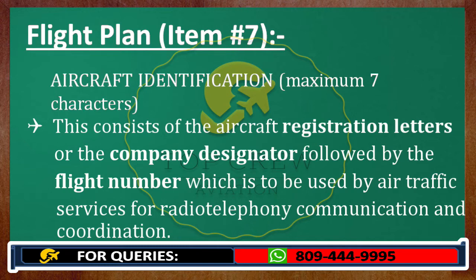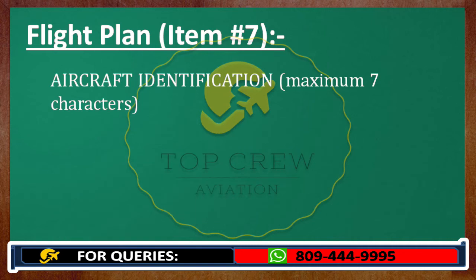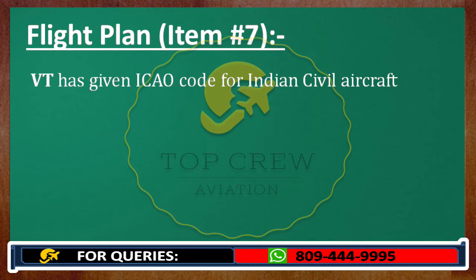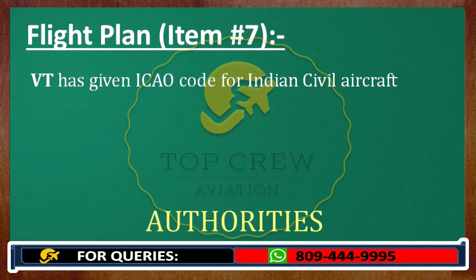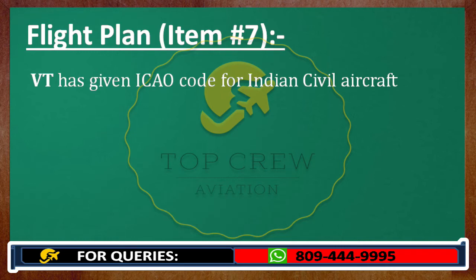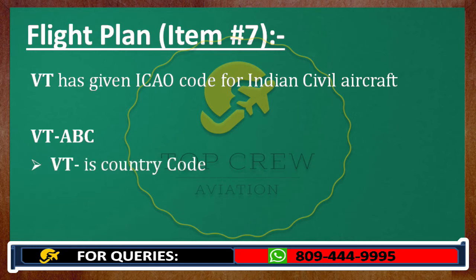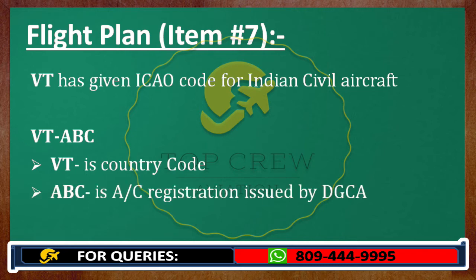Now we'll understand how registration and identification of aircraft work in India. VT has been given as the ICAO code for Indian civil aircraft. Authorities decide about the aircraft registration code or identification code — not the pilots. For example, VT-ABC: VT is the country code, and ABC is the Aircraft Registration Code issued by DGCA — the Director General of Civil Aviation in India.